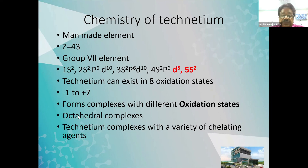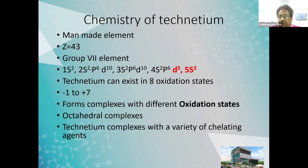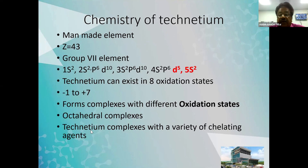Technetium forms complexes in different oxidation states. For example, the radiopharmaceutical DMSA exists as DMSA-3 and DMSA-5. HMPAO is technetium in plus-five state. Different oxidation states are possible, and technetium generally forms octahedral complexes. We are able to make this large number of radiopharmaceuticals because technetium complexes with a variety of chelating agents.